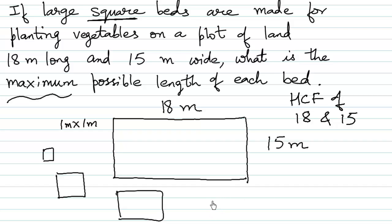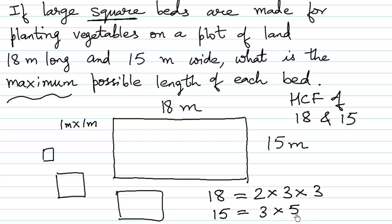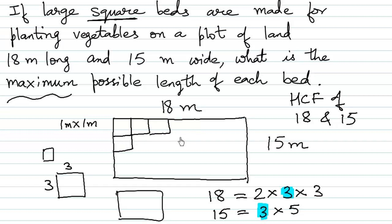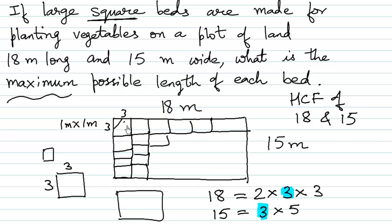The prime factorization of 18 is 2 × 3 × 3, and the prime factorization of 15 is 3 × 5. What is common in both numbers is just 3. This means a 3×3 square — 3 meters length and 3 meters breadth — is possible. We'll have 6 squares along the length and 5 squares along the breadth, and this is the maximum possible dimension of each bed.